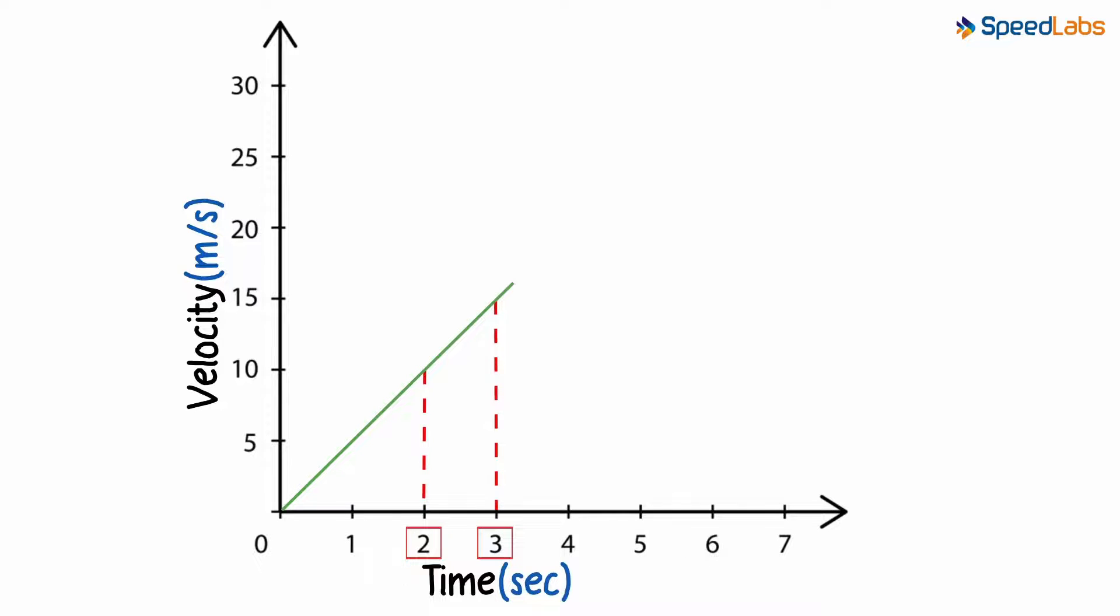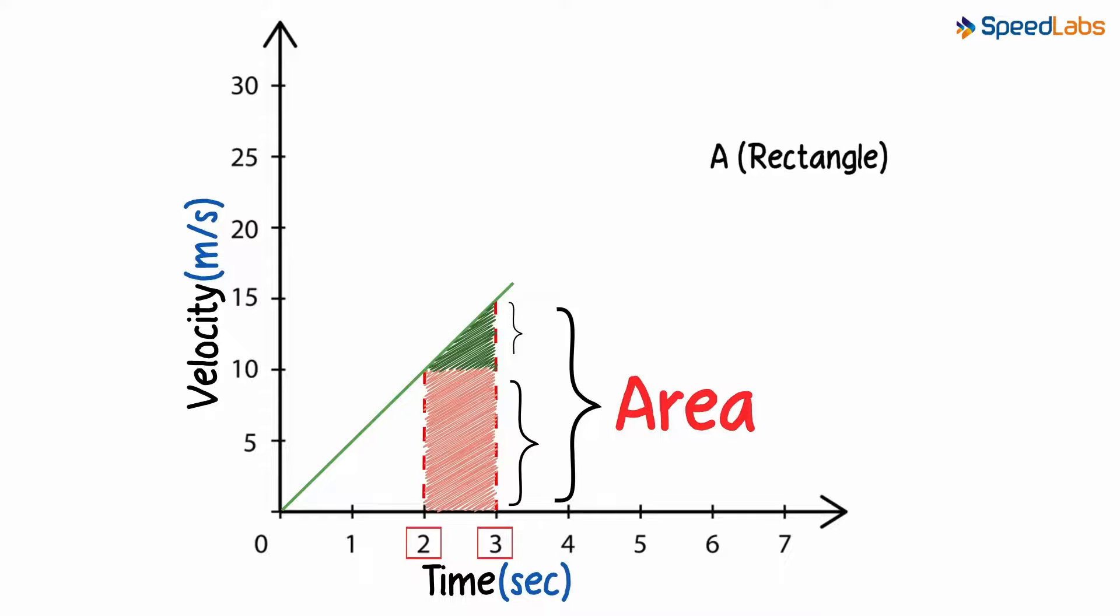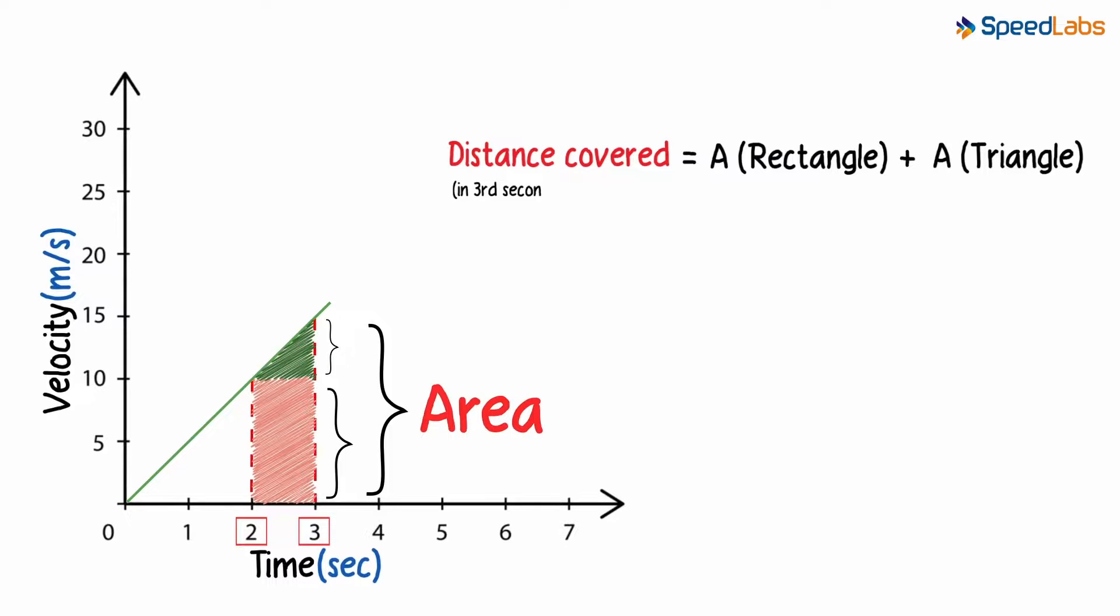We saw previously that the area of the shaded section was equal to the distance covered. That is the same even in this example except for the fact that we now have a mix of two shapes here: a rectangle and a triangle as well. So what we need to calculate is the area of this rectangle and the area of this triangle, and then add them to get the distance covered in the third second. Calculating this area will get us the precise answer.